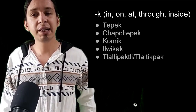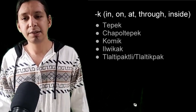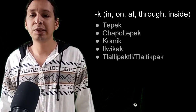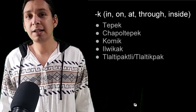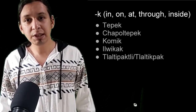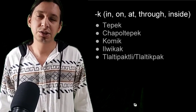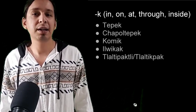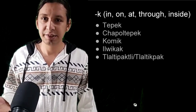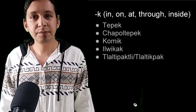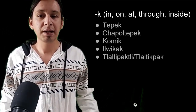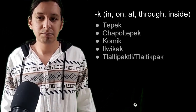The ending -k or -c can also appear alone. Tepetl means a hill, tepek means 'on the hill.' Chapoltepek — on the grasshopper hill. Komik — on the komitl jar. Ilwikak — on or in the sky, from ilwikatl meaning sky. Tlaltipak means 'on the earth,' from tlaltipaktli meaning the earth.